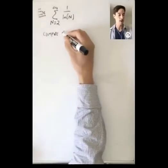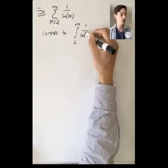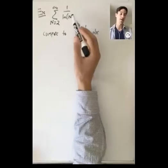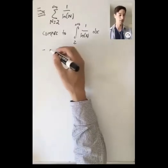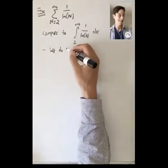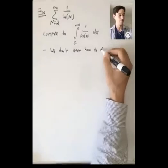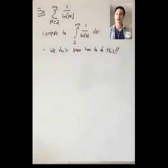Before jumping into the comparison test, why use it here? We could try comparing to the integral from 2 to infinity of 1/ln(x) dx and use the integral test, but the problem is this is not an integral we know how to do. This is common — the comparison test allows us to determine whether a series converges or diverges in cases where the integral test would get us stuck with an integral we don't know how to evaluate.